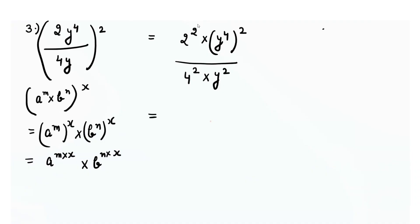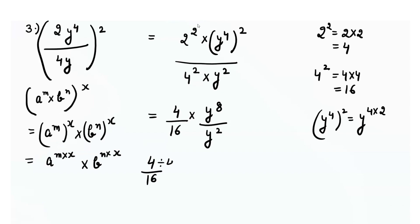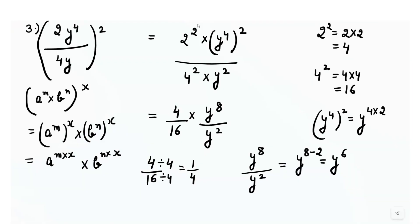Now we solve the numbers: 2 raised to power 2 is 4, and 4 raised to power 2 is 16. Then y raised to power 4 times 2 gives y raised to power 8, over y raised to power 2. We simplify 4 over 16 with 4 to get 1 by 4. For y raised to power 8 over y raised to power 2, using the division rule, we subtract powers to get y raised to power 6. The final answer is y raised to power 6 over 4.